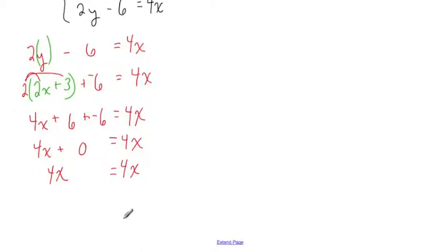Now I need to get my variable to one expression. So I'm going to add the opposite of this x term in order to get rid of it. And I add the opposite to both expressions. And 4x plus negative 4x is 0. 4x plus negative 4x is 0. Here we end up with an equation that states that 0 equals 0.